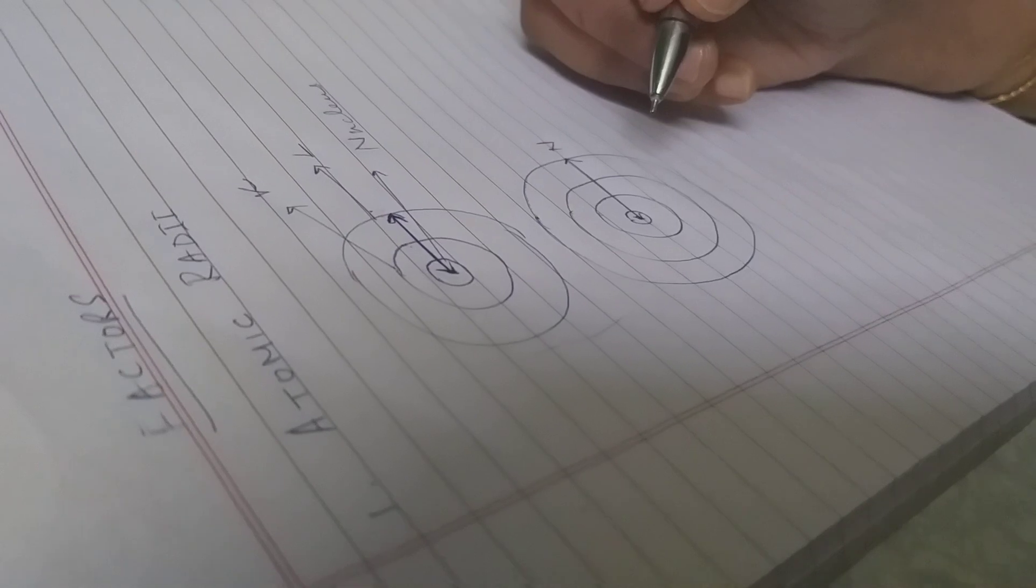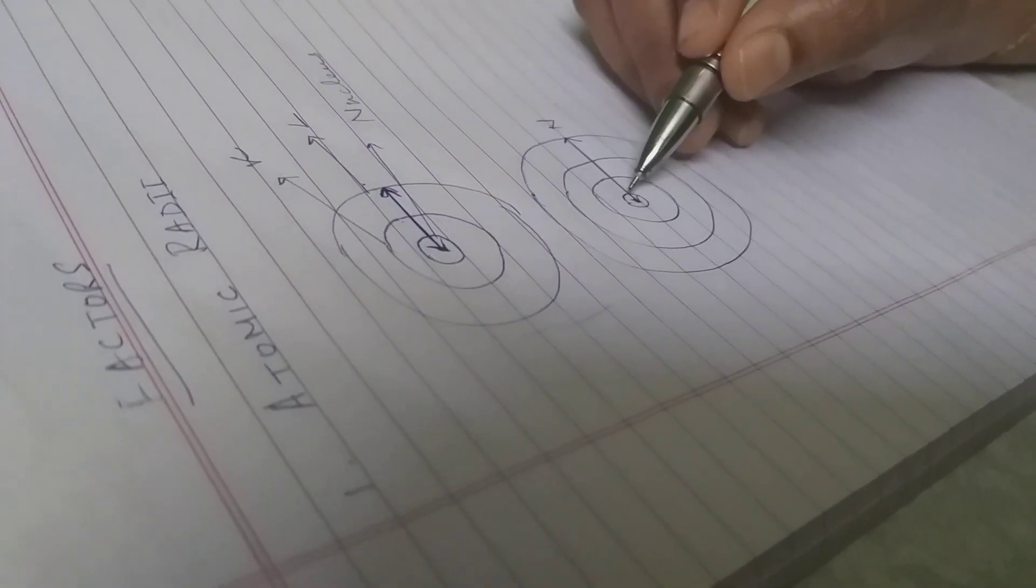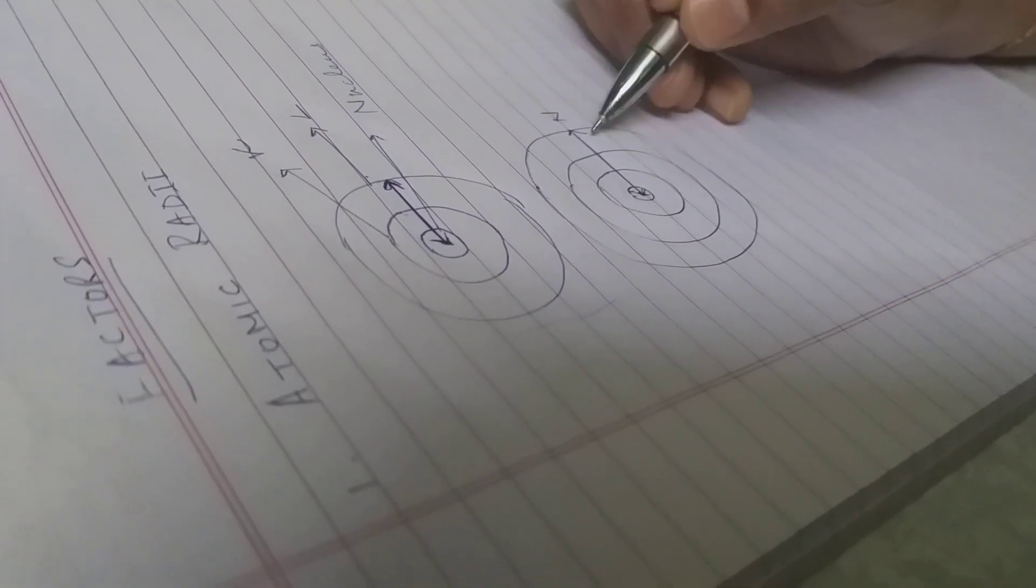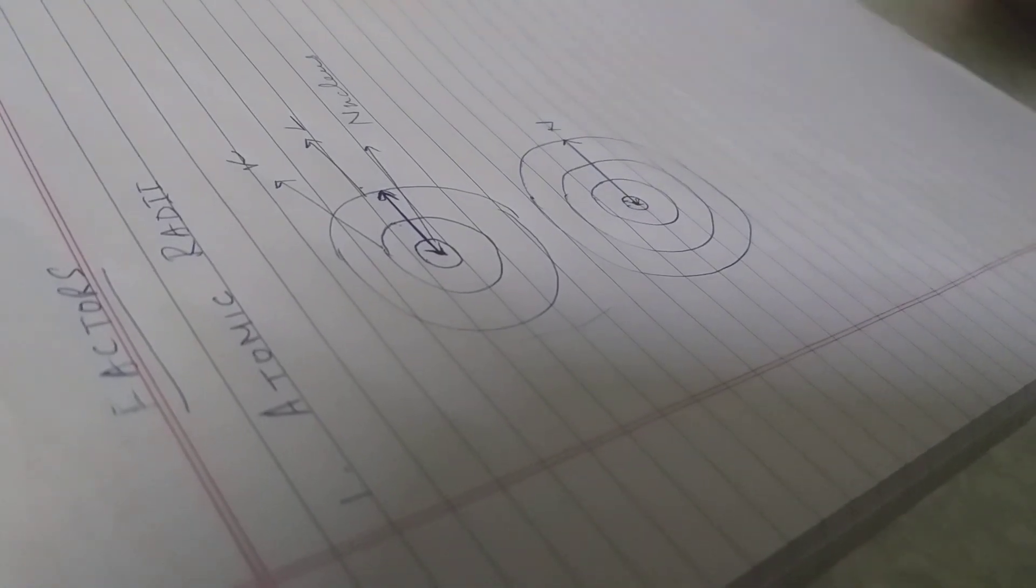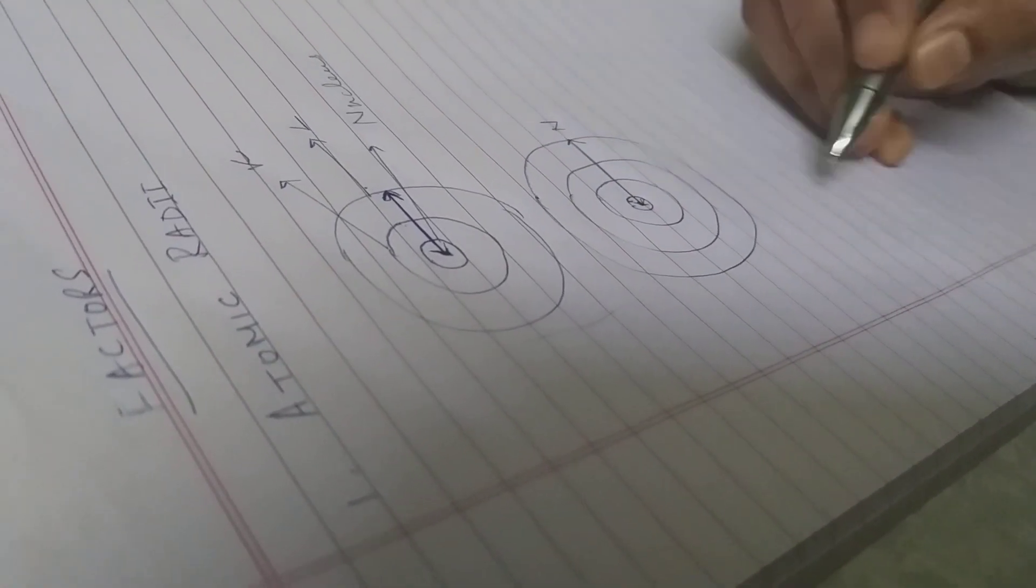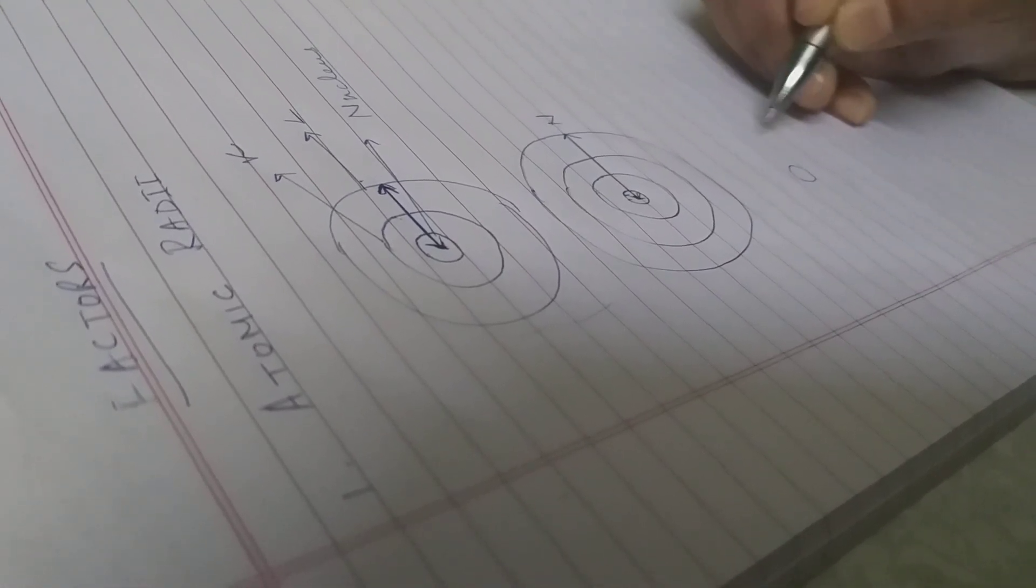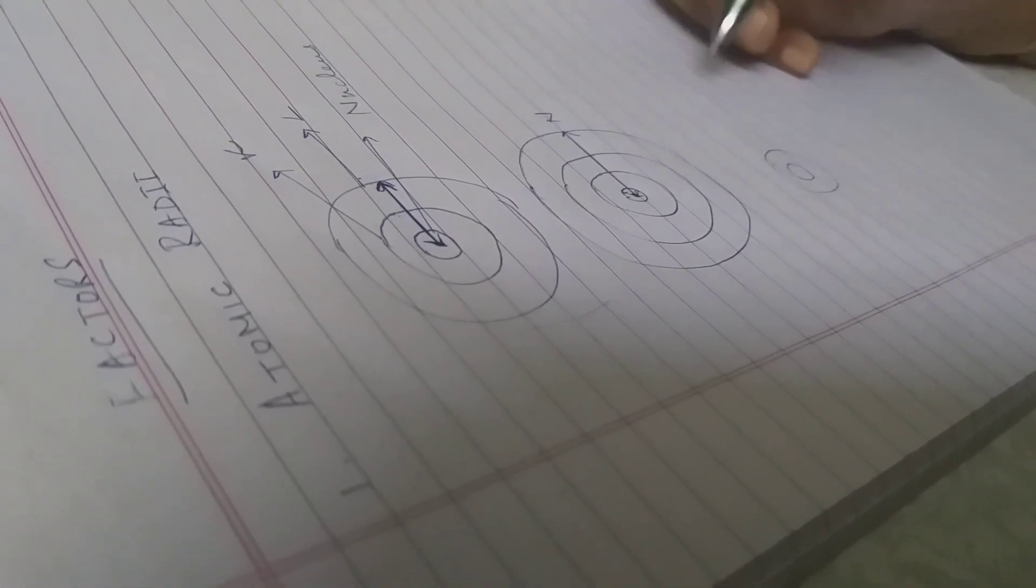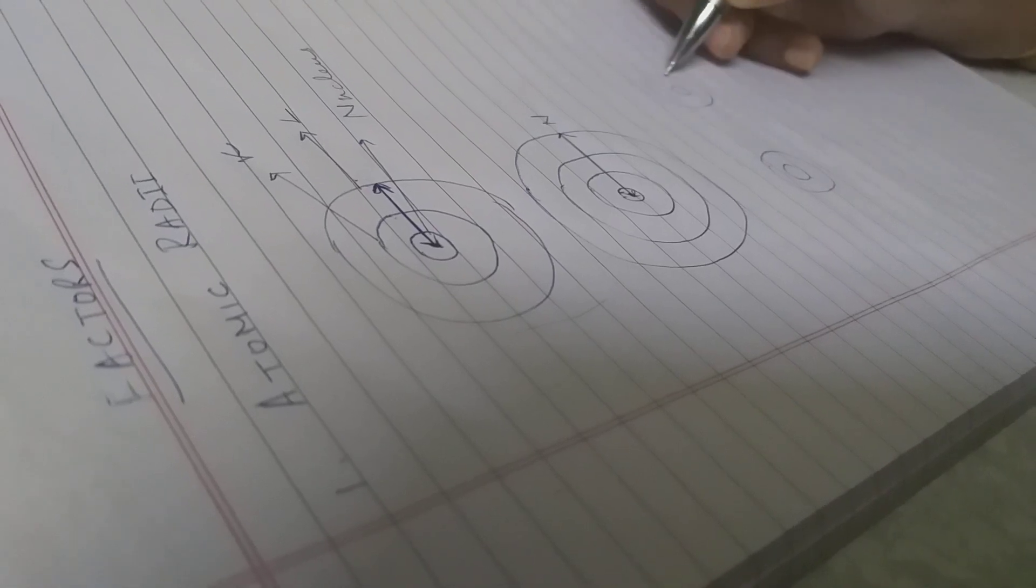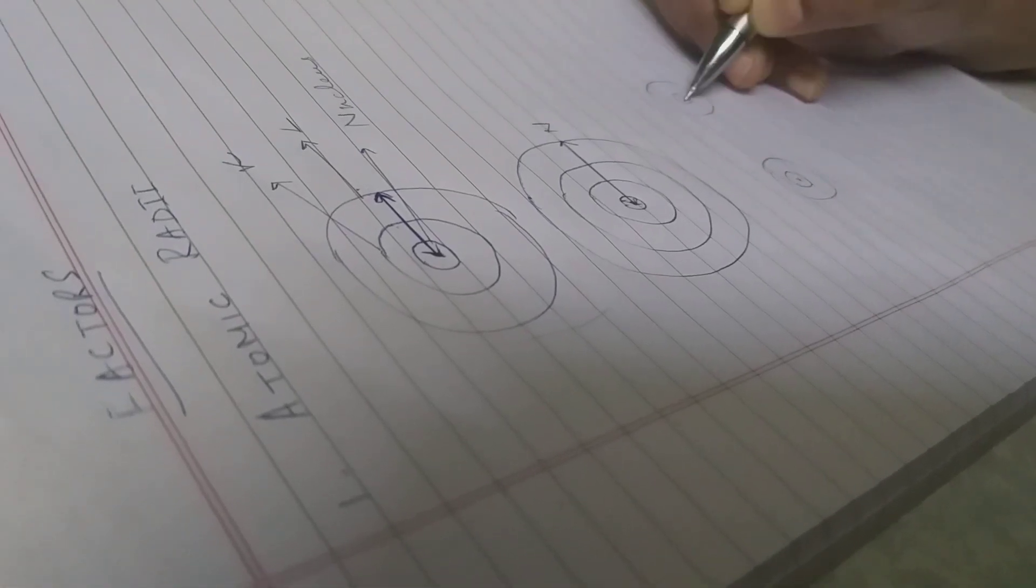So this is one important factor which will help you in distinguishing the other periodic properties which I will be doing today. Now, supposing this is my atom, this is one atom of hydrogen, this is another atom of hydrogen.